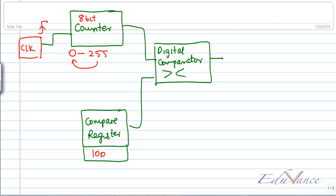And for example, in my compare register I keep the value as 100. And let's say that right now I am saying that the comparator is greater than. So if I say this is x and this is y, my output is 1 as long as x is greater than y.